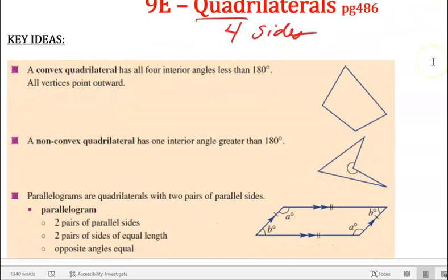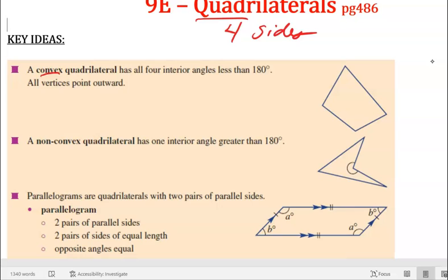There are two types of polygons. A convex quadrilateral has four interior angles less than 180 degrees — a whole shape that doesn't have anything bulging inward. All vertices point outward.